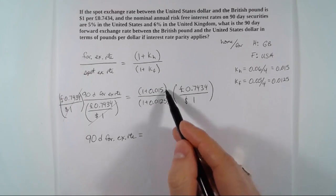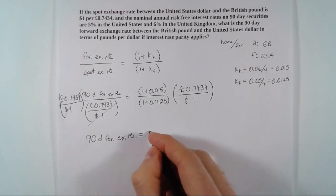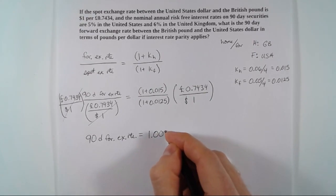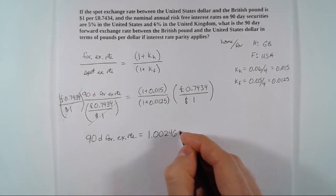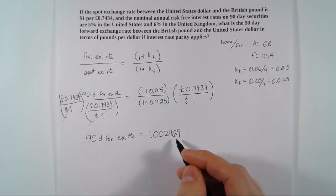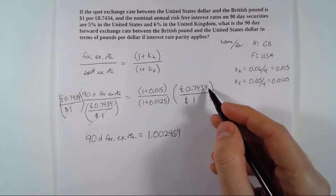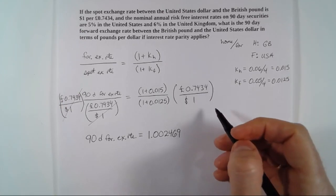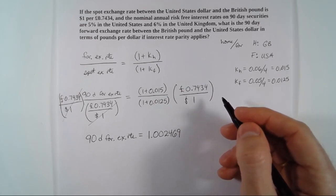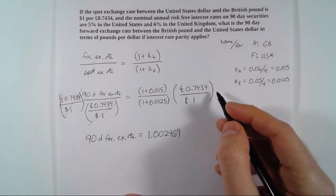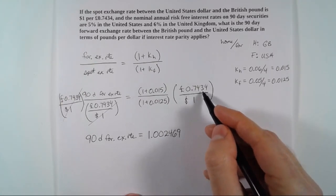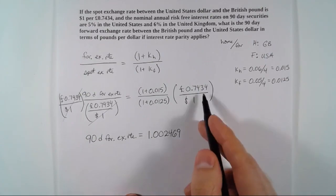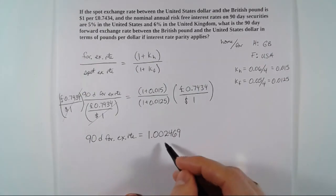If you worked that out, you should have gotten 1.002469 for the interest rate ratio. When working with exchange rates it's generally a good idea to keep a few extra decimal places, because when exchanging large quantities — say a million dollars or a million pounds — a few decimal places in the exchange rate can make thousands of dollars or pounds of difference. So let's retain some extra decimal places here.